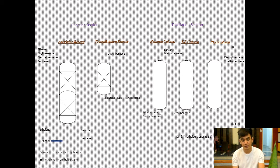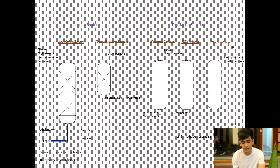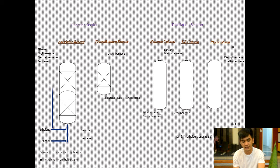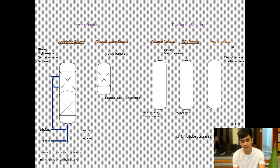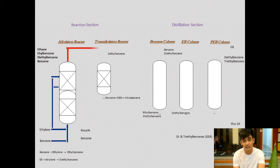The EB1 process consists of two sections: the reaction section and the distillation section. In the reaction section, there is an alkylation reactor and a transalkylation reactor. In the alkylation reactor, ethylene and benzene are fed at the bottom together, and ethylene is also fed to the top of the column. This reactor uses a zeolite catalyst operating adiabatically. Process conditions are selected to keep the aromatic reaction mixture in the liquid phase. Excess benzene is used and ethylene is injected before each bed. Multiple ethylene injection points improve selectivity and enhance catalyst stability.